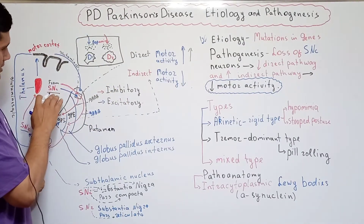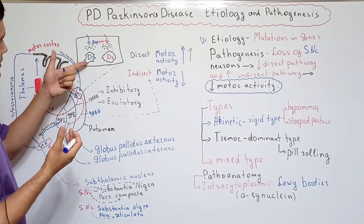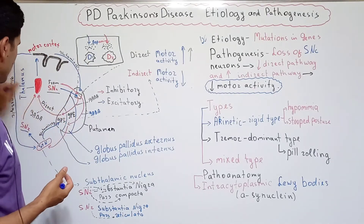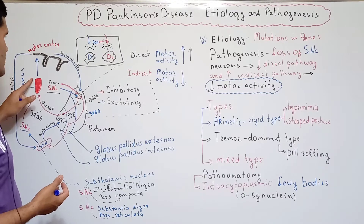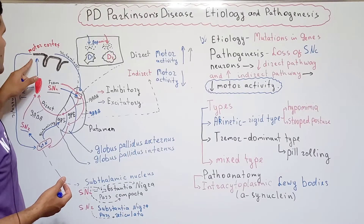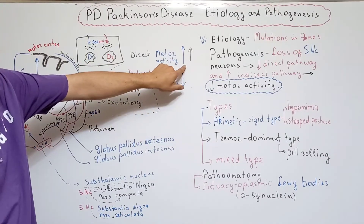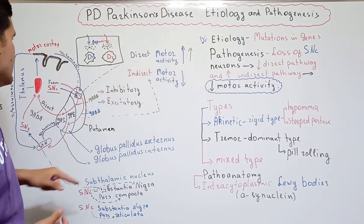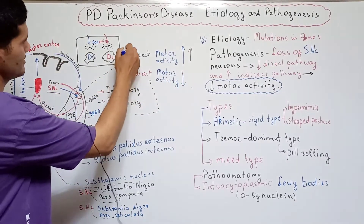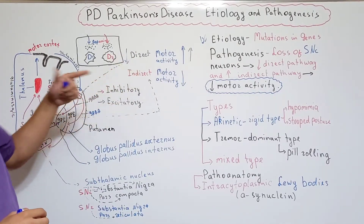The Substantia Nigra Pars Compacta discharges dopamine and it can stimulate dopamine-1 receptors. As a result, the net result is activating the thalamus. When the thalamus is activated, it can cause stimulation of the motor cortex. The net result is increasing motor activity. The loss of dopamine means decreased function of the direct pathway.